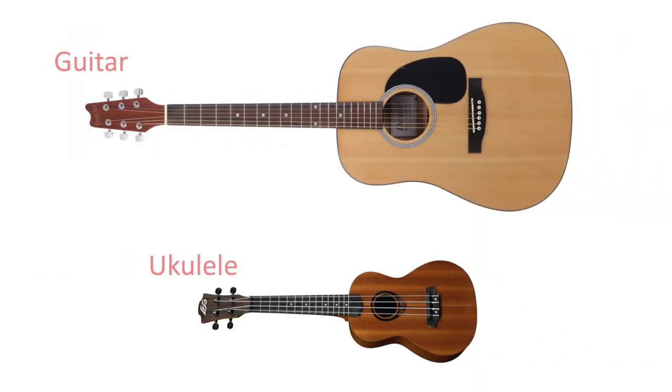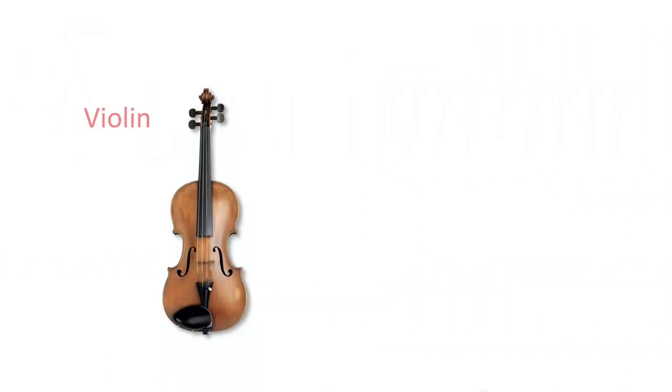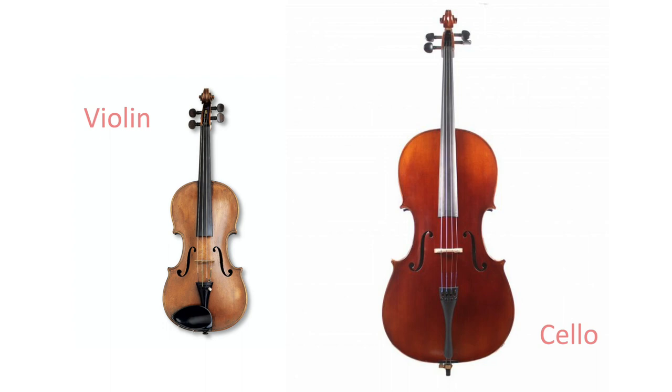Instruments like the guitar or ukulele don't have as visible a patterning to their notes. And other instruments like the violin or cello don't have anything to see at all. You just need to learn where your hand position should be and then use your ear and muscle memory to find the notes.